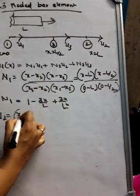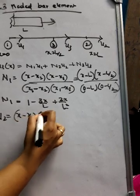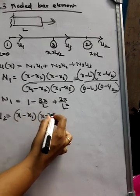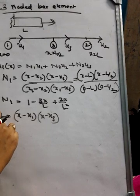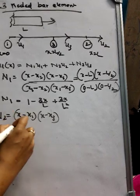N2 would be equal to (x - x1)(x - x3). Here, what's important is that you are going to leave the x2 term out of the numerator.